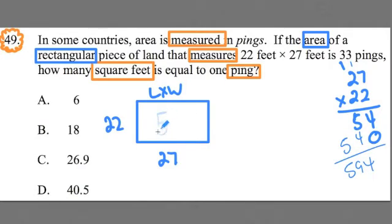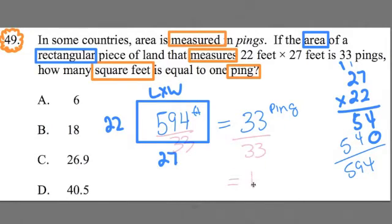We get 594. So we find out that this area of this parcel land is 594 feet squared. And that's going to be equal to 33 pings. Now we're trying to find out how many square feet is one ping. So we're going to have to do some division here. Divide by 33. Divide by 33. This will get us one ping.